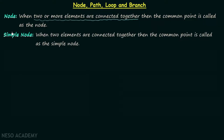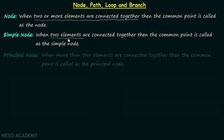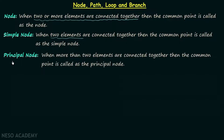The first one is known as the simple node. When two elements are connected together, the common point is called the simple node. The second one is called the principal node — when more than two elements are connected together, the common point is called the principal node.